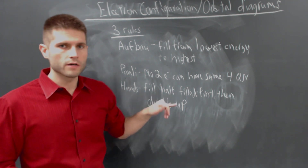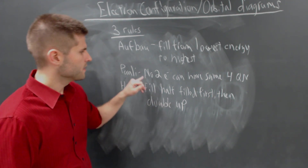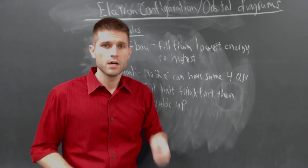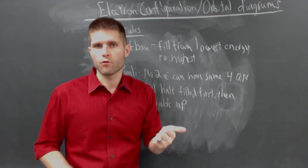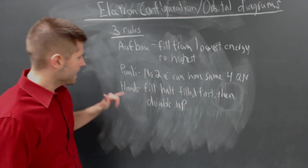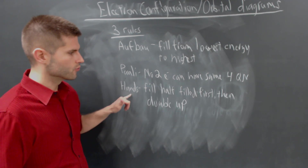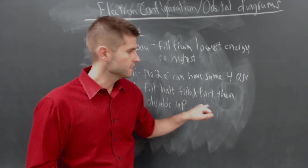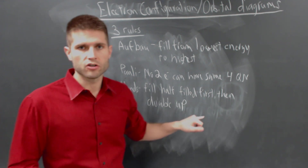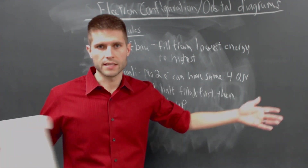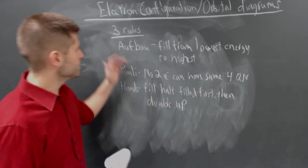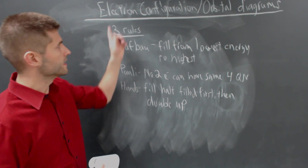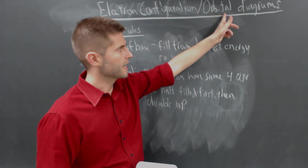The Pauli Exclusion Principle — no two electrons can have the same set of four quantum numbers. We can have three of them be the same, but the fourth one has to be different. And then Hund's Rule: you're going to fill half-filled orbitals first, then you will double up the electrons and fill in the rest to complete the orbital. These are the three principles we're going to be following when writing electron configurations as well as orbital diagrams.